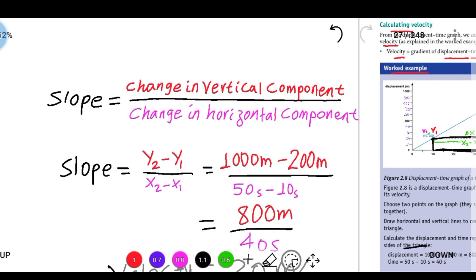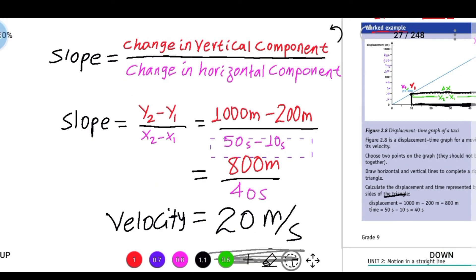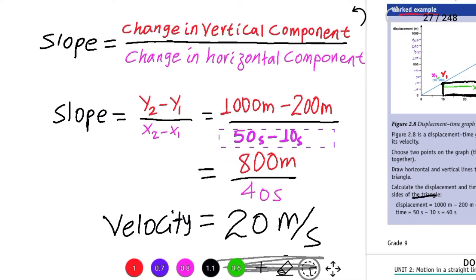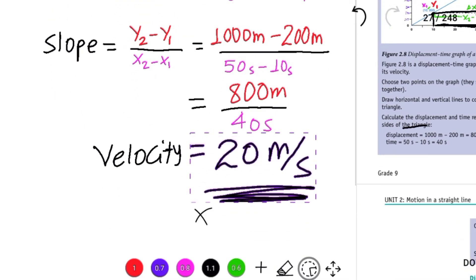Slope equals change in vertical component over change in horizontal component. The vertical component change is 1000 minus 200 meters, which equals 800 meters. The horizontal change is 40 seconds. This gives 20 meters per second.